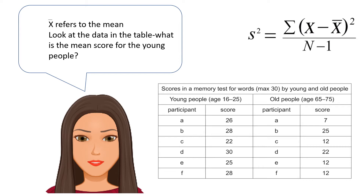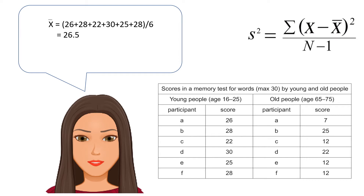Now let's look at this data in the table. What is the mean score for the young people? Pause here to calculate this. The mean score for the young people is 26 plus 28 plus 22 plus 30 plus 25 plus 28, divided by 6 because there are six different scores. This gives us a mean of 26.5.